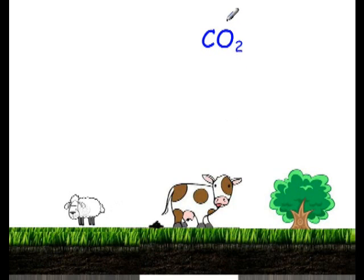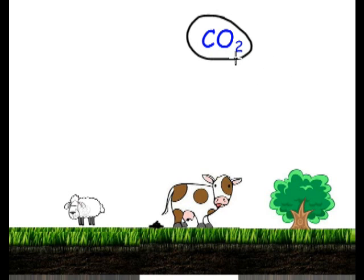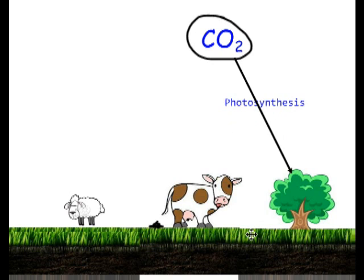We're going to look at the carbon cycle. Starting with carbon dioxide in the air, the carbon from CO2 can be incorporated into plants by photosynthesis. We don't need to worry about the photosynthesis equation at this time, but the carbon from carbon dioxide is incorporated into trees, grass, and other plant matter.